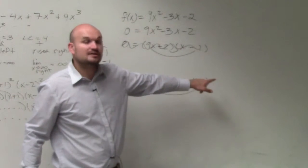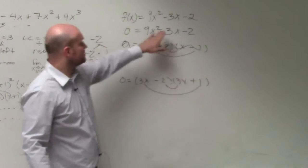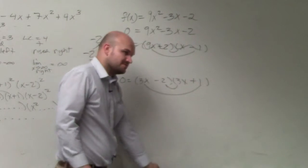Negative 6x plus 3x is negative 3x. There you go. There's my final answer. Now, I'm sorry, my final factored form.